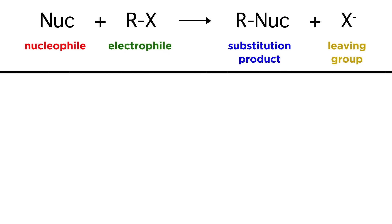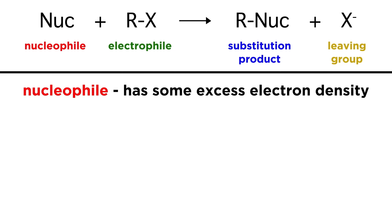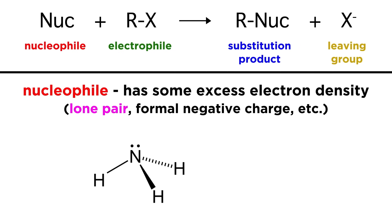Let's review this terminology for clarity. A nucleophile is an atom or molecule that has some region of excess electron density. This can be a lone pair, a formal negative charge, just some region that we can consider as electron excess.